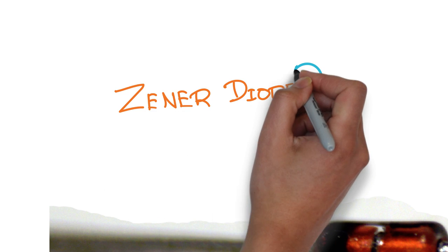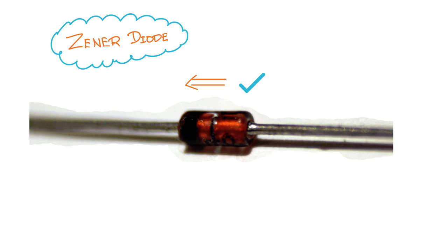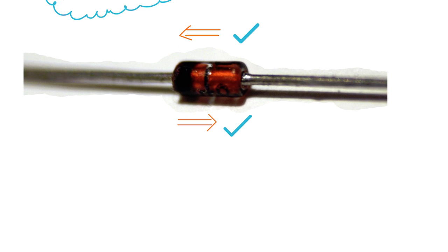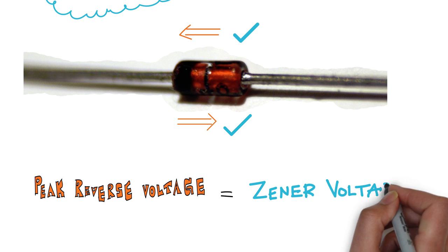A Zener diode generally behaves very similarly to a signal or a rectifier diode, except that its breakdown voltage is lower. A Zener diode is intended to allow current to flow when the peak reverse voltage is reached or exceeded. The peak reverse voltage of a Zener diode is called Zener voltage.